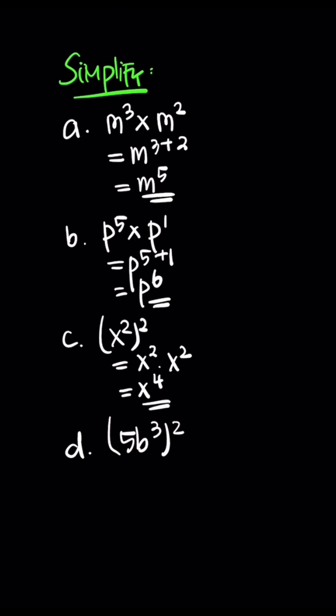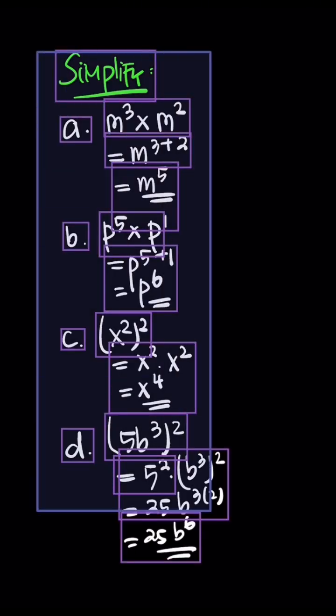And then five b cube squared. So five squared, b cube squared, then this is 25 b three times two. Do this same like c. So this is 25 b power six.